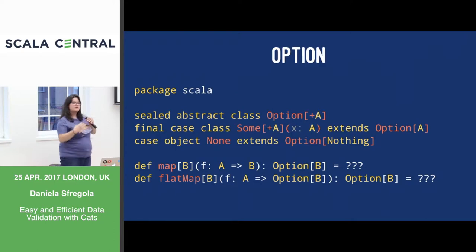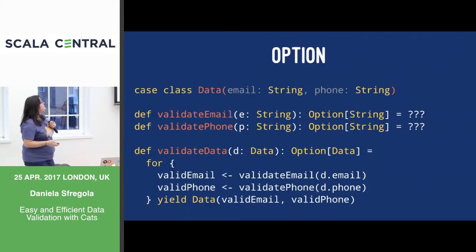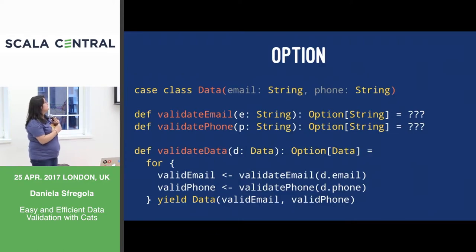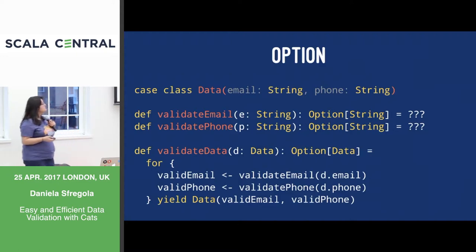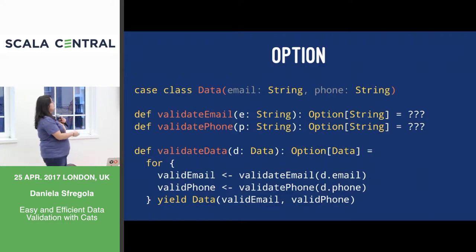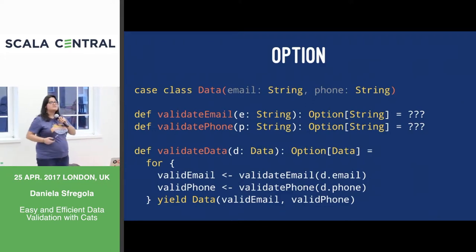You have a map and a flatMap, so you can look inside the container and concatenate containers together. This is my implementation: I have a case class called Data that has an email and a phone. Then I have two functions: validateEmail that takes a String and returns an Option of String, and validatePhone that gets another String and returns an Option of String. And then validateData combines the two Options together. What's wrong with my code?